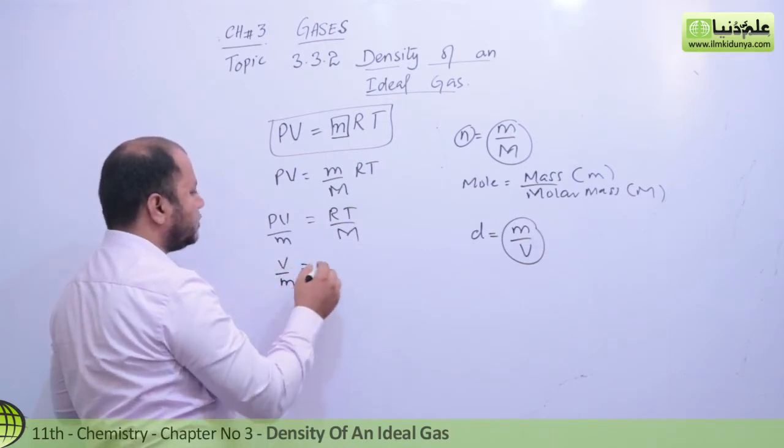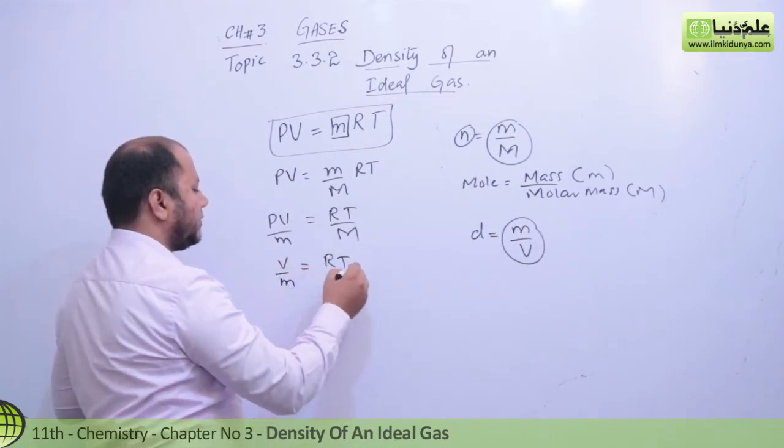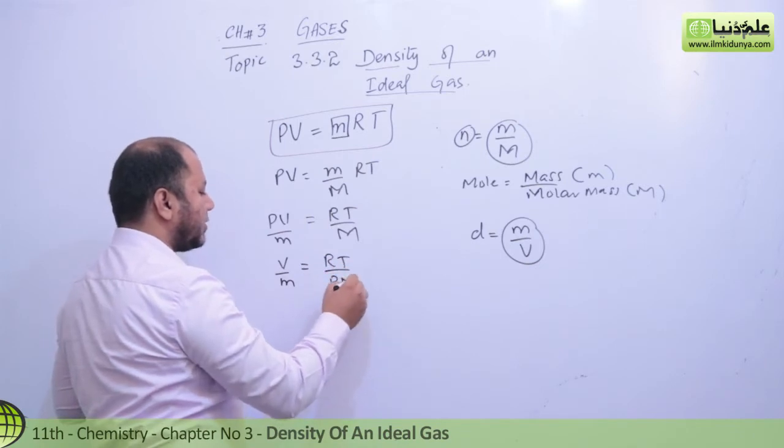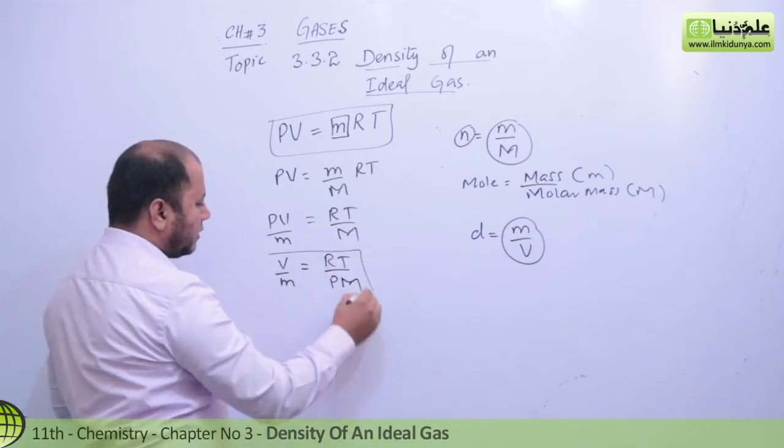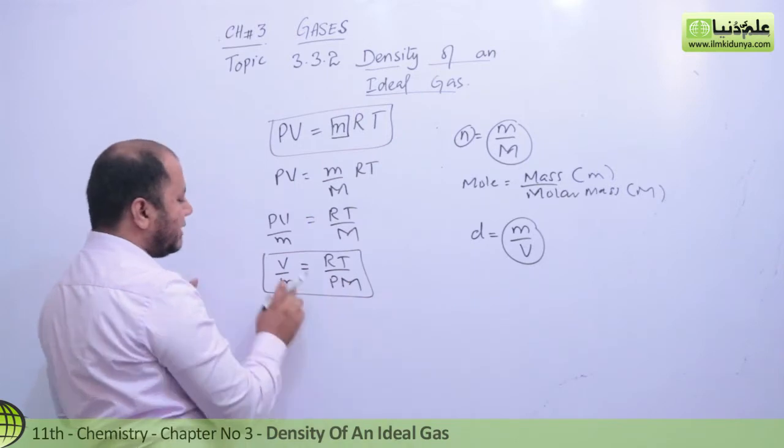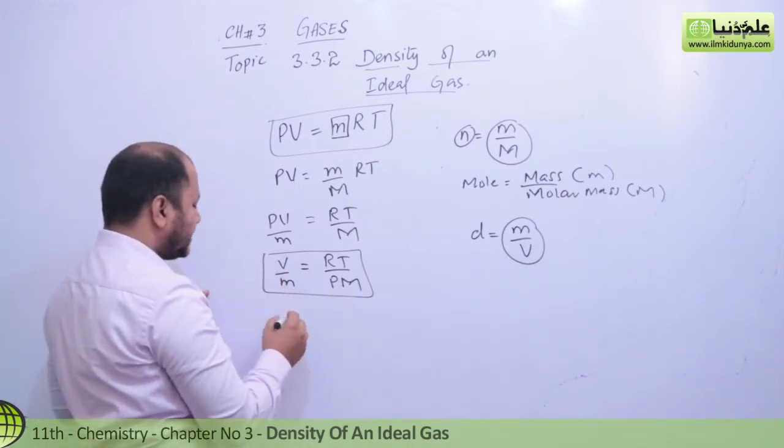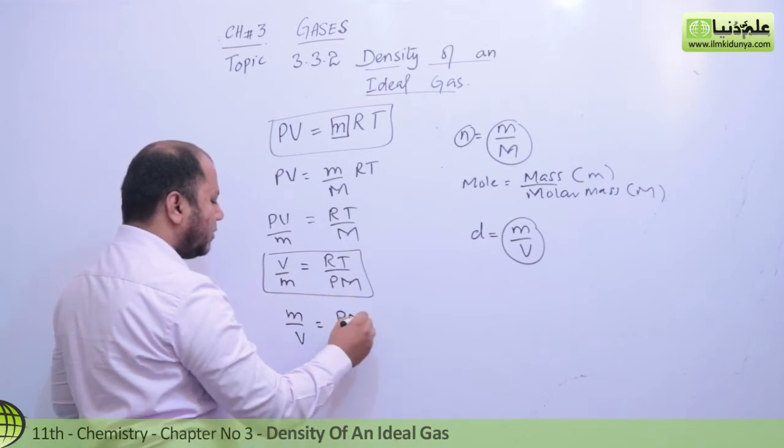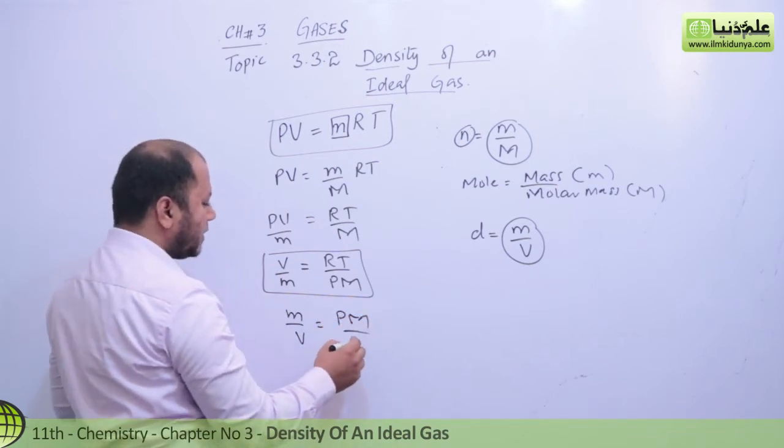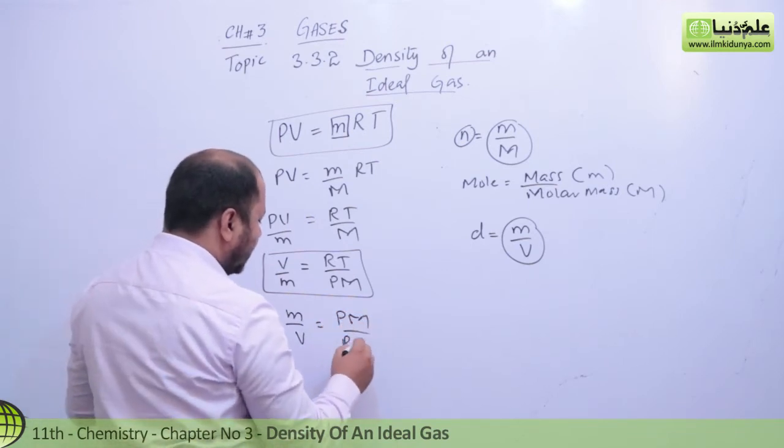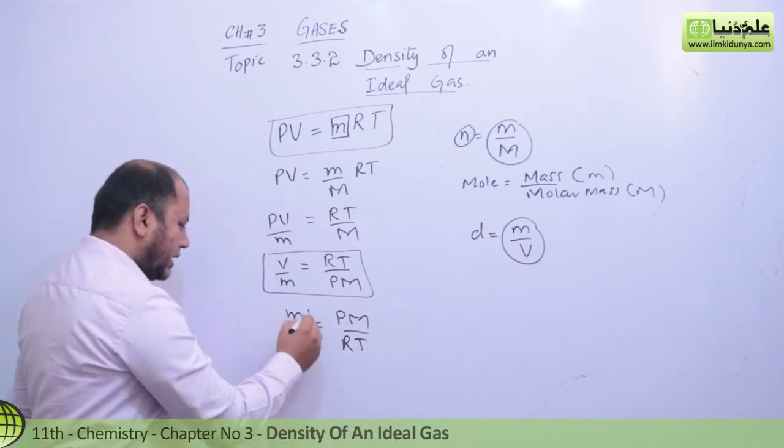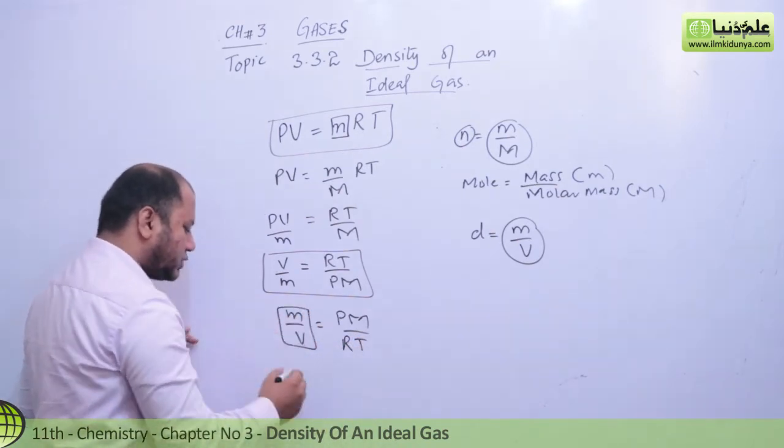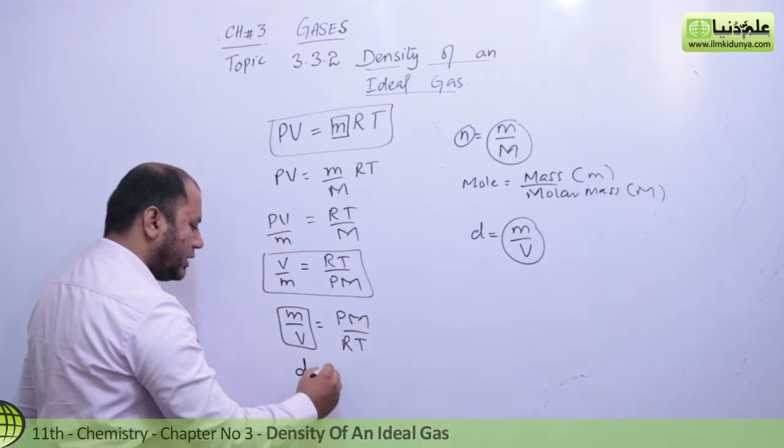Now students, take the reciprocal because we need the value in m over V, not V over m. After taking reciprocal, m over V becomes pressure into molar mass over general gas constant R into T. This relation can now be converted to d, and you'll get the density value.